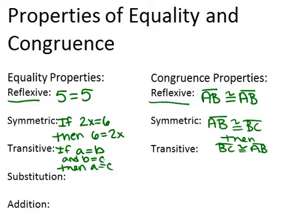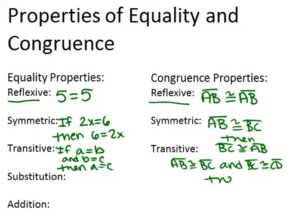Same exact thing if we're talking about congruence. For example, if line segment AB is congruent to line segment BC, and line segment BC is congruent to line segment CD, then the conclusion you can draw is that AB has to be congruent to CD, because everything's congruent.